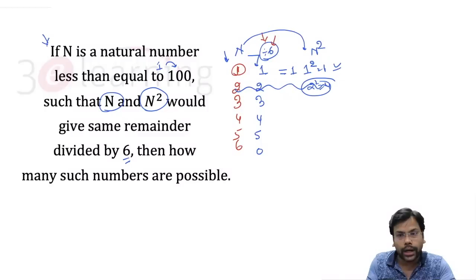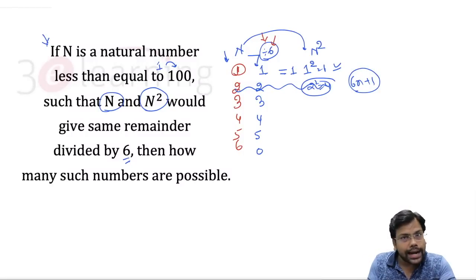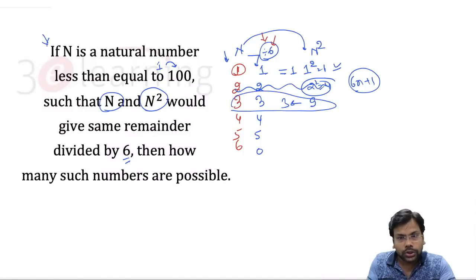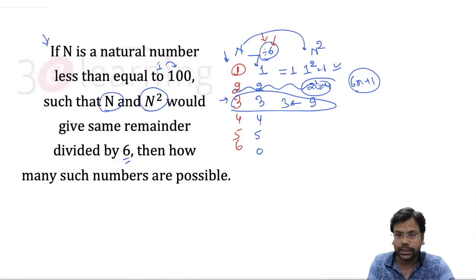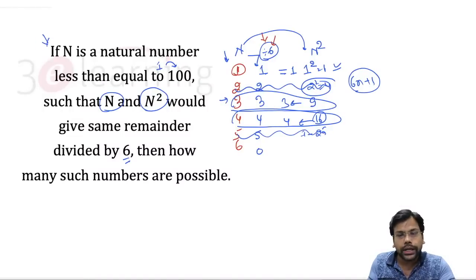Numbers of the form 6n+1 give the same remainder for n and n². 3² = 9, divided by 6 remainder is 3 — same, so I want this. 4² = 16, divided by 6 remainder is 4 — same, so I want this. 5² = 25, divided by 6 remainder is 1 — not the same as 5, so I don't need this.